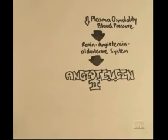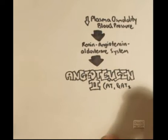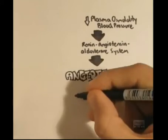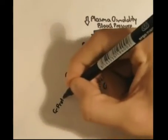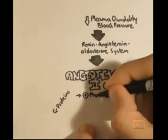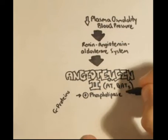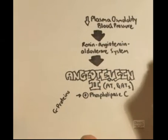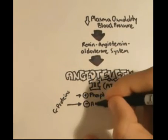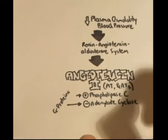Angiotensin 2 works by binding to angiotensin 1 and angiotensin 2 G-protein receptors, and works through the second messengers diacylglycerol and inositol triphosphate, activated by phospholipase C. Angiotensin 2 also inhibits the activity of adenylate cyclase. If you do not know what these are, look at the G-protein video provided previously.